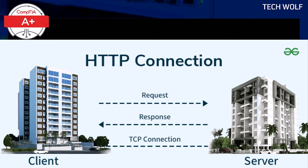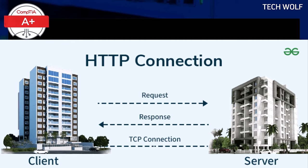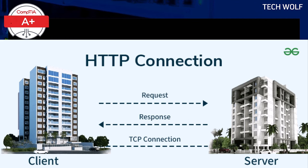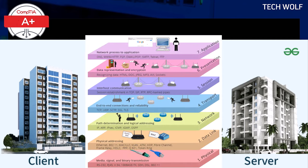In short, IP addresses are like street addresses or house numbers showing where a device is located, while port numbers are like apartment numbers specifying exactly which service or app on that device should receive the data. The journey data takes across the internet, moving through different layers, is like the various roads and transport you take to reach your destination — these layers represent the OSI model in networking.